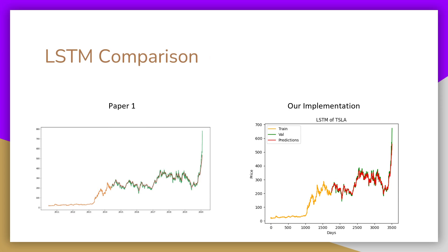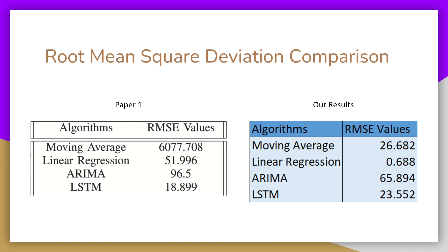This is the LSTM comparison — you can tell it's very similar to that of the paper. For the root-mean-squared error comparison, Paper 1 provided RMSE values for all of its models. Ours are much better in the models they did wrong, and comparable in the models that we copied.